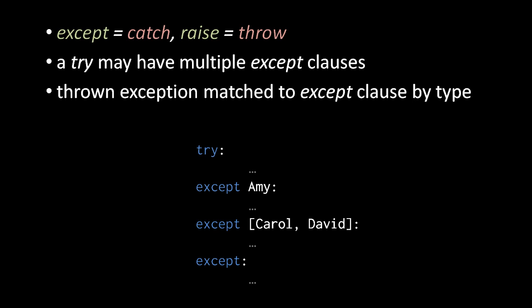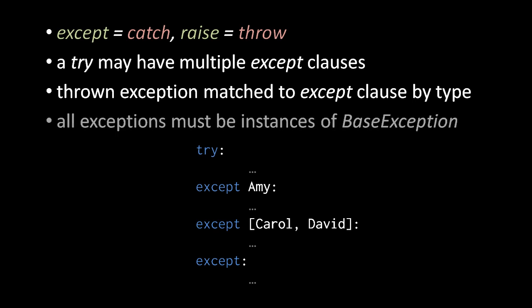And finally, the last thing to say about exceptions here is that whereas in JavaScript an exception can be an object of any type, in Python exception objects must be instances of the base exception class. That is, they must directly be instances of that class, or they must be instances of some descendant of the base exception class.